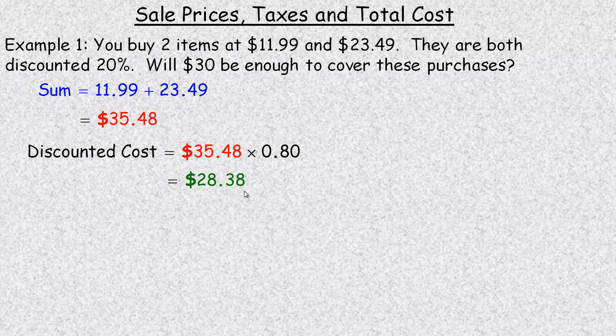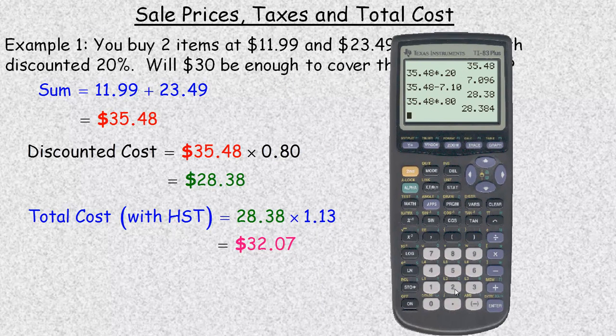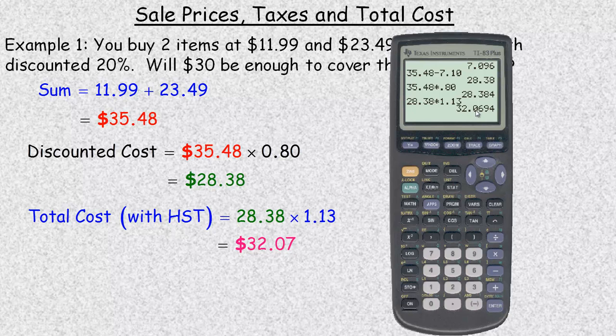So $28.38 is the price. Now we have to add in the tax. I'm doing this for the province of Ontario in Canada, and our tax is called the HST and it's 13%. So we're going to add 13% to $28.38. Adding 13% on, we multiply by 1.13, and that gives $32.07.